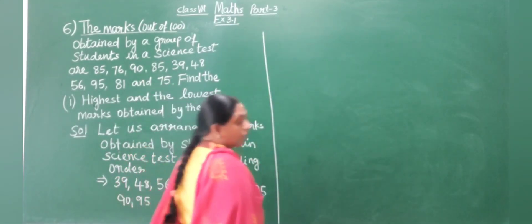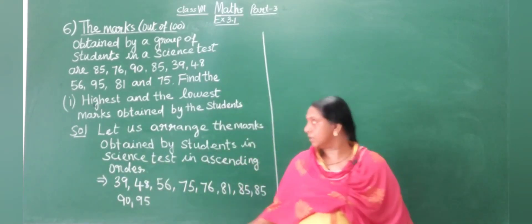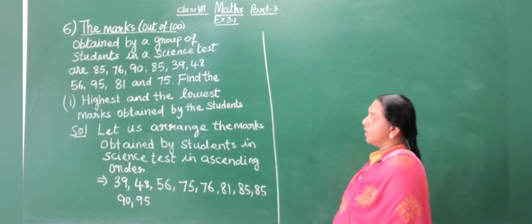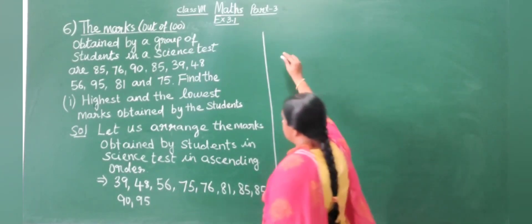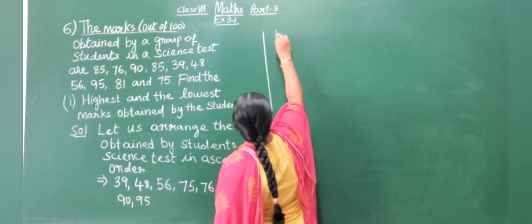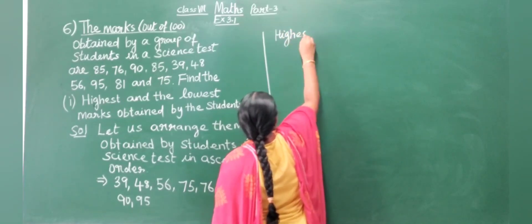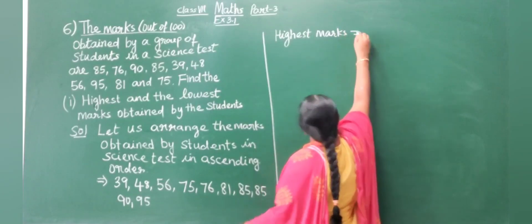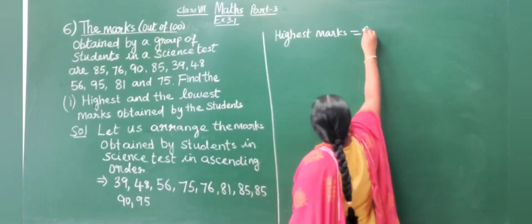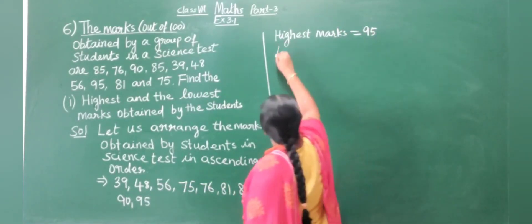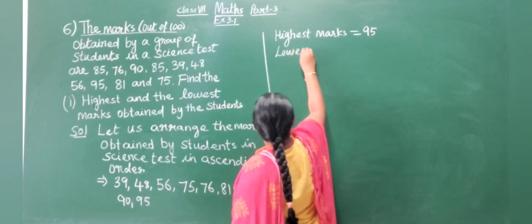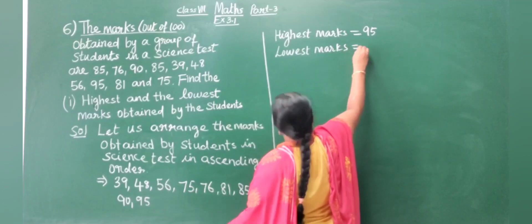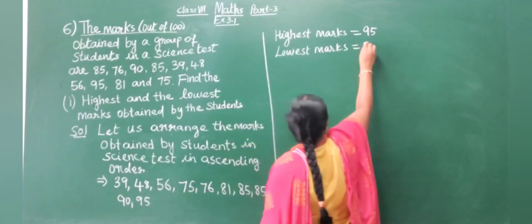Now we will find out the highest and the lowest. The highest marks acquired by the student is 95. The lowest marks is 39.